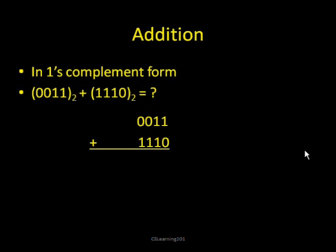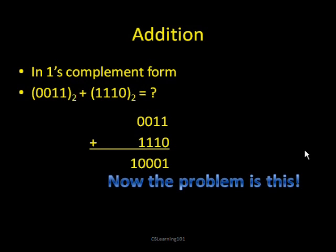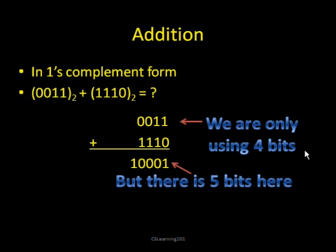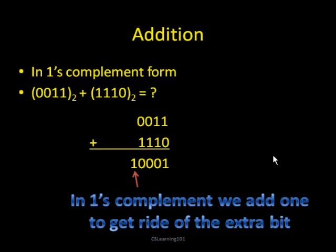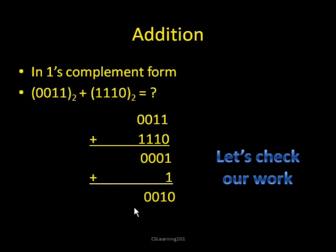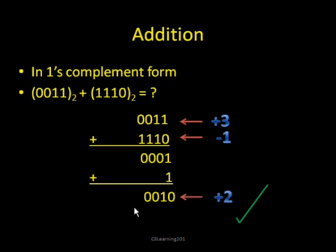Now suppose we're doing a 1's complement form of addition. We add normally, but we have a problem: we're using only 4 bits, but the answer has 5 bits. In the 1's complement method, we add 1 to the number to get rid of this extra bit. We cancel that bit, then add 1 to the other side, and we get 0010. If you check your work, you'll see that it works out.